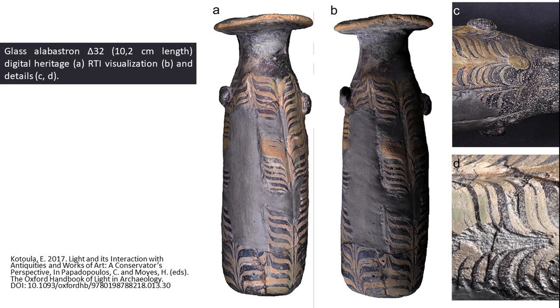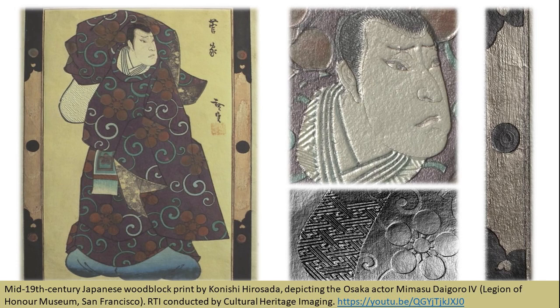One particular field in which RTI has been especially helpful is conservation studies. It enables the detection of subtle surface details in higher resolution with minimal to no impact on the object, contributing not only to documentation of the object's condition but also to prevention of future damage and deterioration, revealing details that could not be detected by the naked eye. Let's see some characteristic examples demonstrating the capabilities and potential of the method for different materials, sizes and contexts.